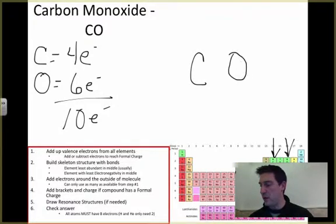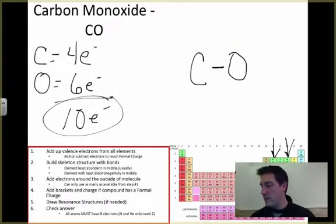Obviously nothing's at the center, they're just bonded together. When I put that bond in, I've used up two. I can use ten, so I've got two there. Let's start putting some around here: three, four, five, six, seven, eight, nine, ten. I've got a problem because I ran out of electrons.